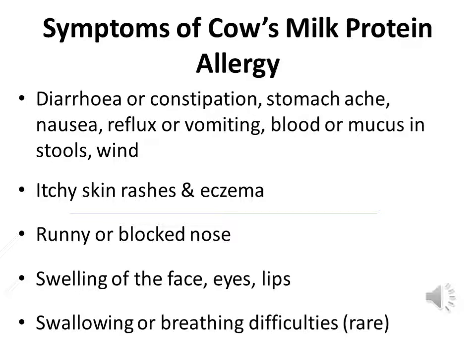Typical symptoms of cow's milk protein allergy include diarrhoea or constipation, bad tummy ache, nausea, reflux or vomiting. Occasionally we see blood in the stools, and many parents describe their children as holding their tummy and arching their back. We also sometimes see skin symptoms such as rashes or a flare-up of eczema.